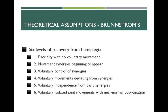In Brunstrom's approach, there are six levels of recovery from hemiplegia. The first is flaccidity with no voluntary movement. The second, movement synergies beginning to appear. The third, voluntary control of synergies. The fourth, voluntary movements deviating from synergies. The fifth, voluntary independence from basic synergies. And the sixth is voluntary isolated joint movements with near-normal coordination.